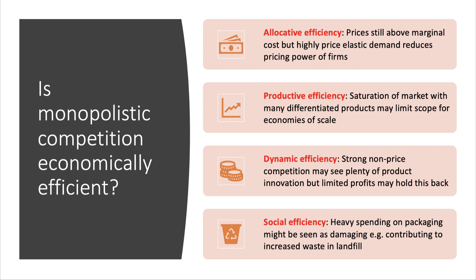A crucial evaluation question: is this kind of industry economically efficient? On allocative efficiency — prices remain above marginal cost in equilibrium, but there's so much choice that the demand curve is fairly price elastic, and therefore firms' pricing power isn't as high as it would be with a monopoly. The extraction of consumer surplus is less. On productive efficiency — there's lots of competition so you'd expect fairly limited X-inefficiencies, but one argument is that the market can become saturated with so many differentiated goods and services, limiting the scope for economies of scale. In an oligopoly, fewer firms dominate and can achieve bigger economies of scale.